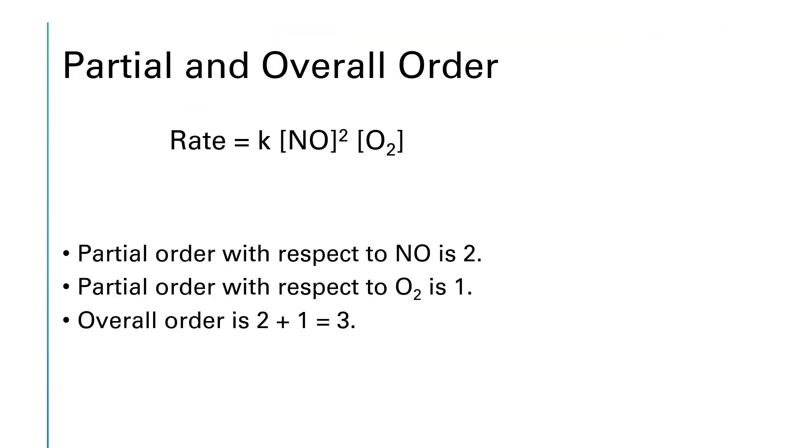And I'd like to reiterate one more time about partial orders and overall order. The partial order is the exponent on a single chemical, and then you get the overall order by adding up all of the exponents. So the partial order with respect to NO is 2—that's this exponent of 2 right here. The partial order with respect to oxygen is 1, because when there's no exponent written, it's understood to be a 1. And then the overall order is going to be 2 plus 1, which is equal to 3.